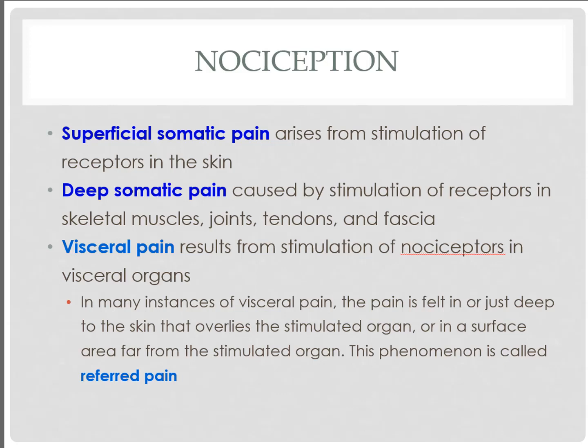We can have different types of somatic pain — whether superficial or deep. Superficial pain takes place with stimulation of receptors in the skin. Deep somatic pain is caused by receptors of the deeper layers — from the muscles, joints, tendons, and fascia surrounding the muscle. With our skin we can typically detect where the pain is taking place, and we can generally pinpoint where muscle or joint pain occurs.